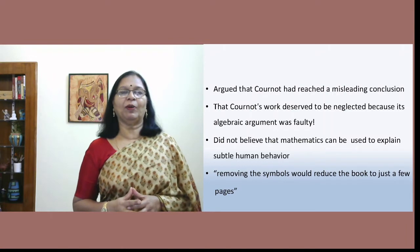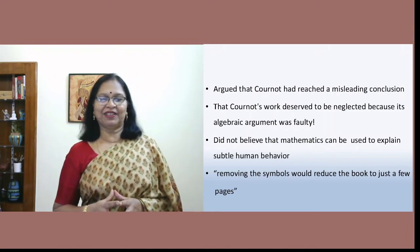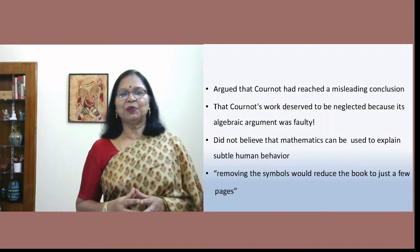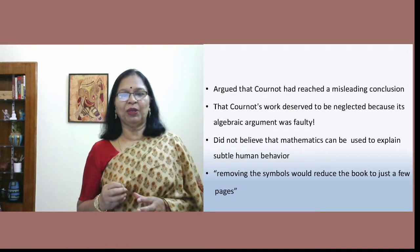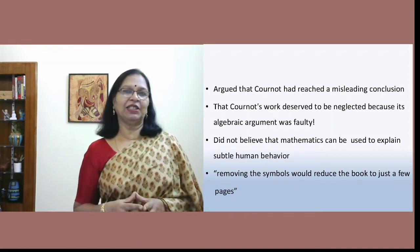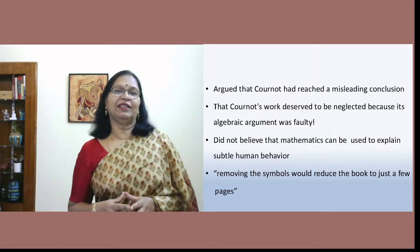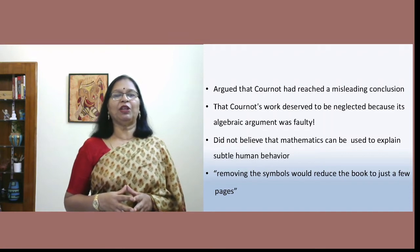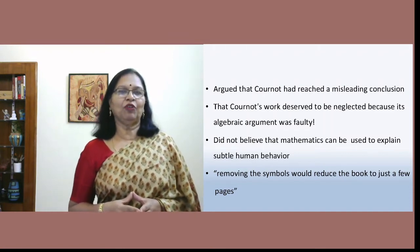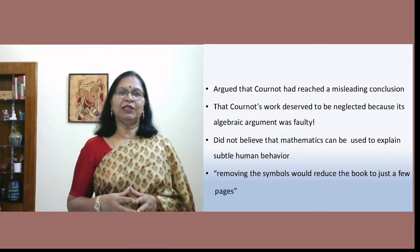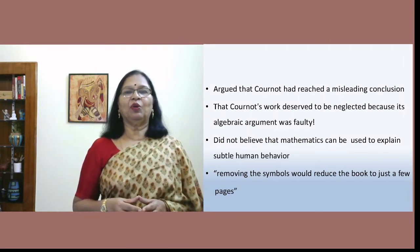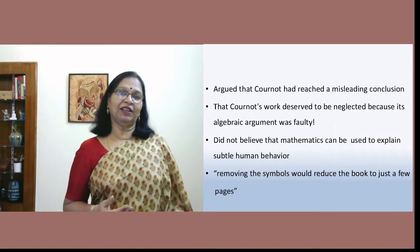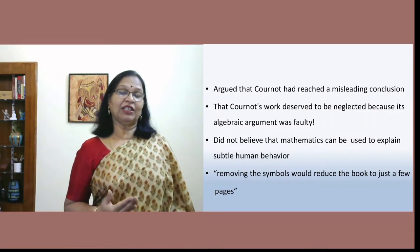Bertrand made a very critical statement that Cournot had reached misleading conclusions. He also said that Cournot's work deserved to be neglected because its algebraic arguments were faulty. Bertrand did not believe that mathematics can be used to explain human behavior. He also said that if you remove the symbols that Cournot used in his writing, the whole writing would be just a couple of pages and not a book.